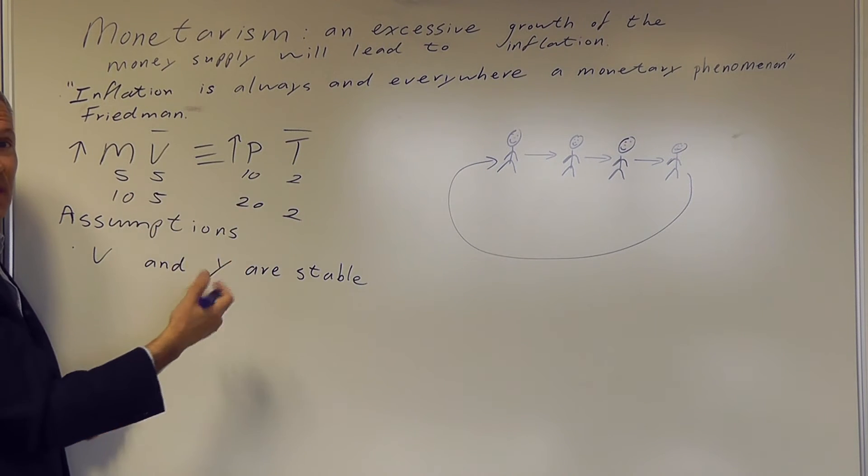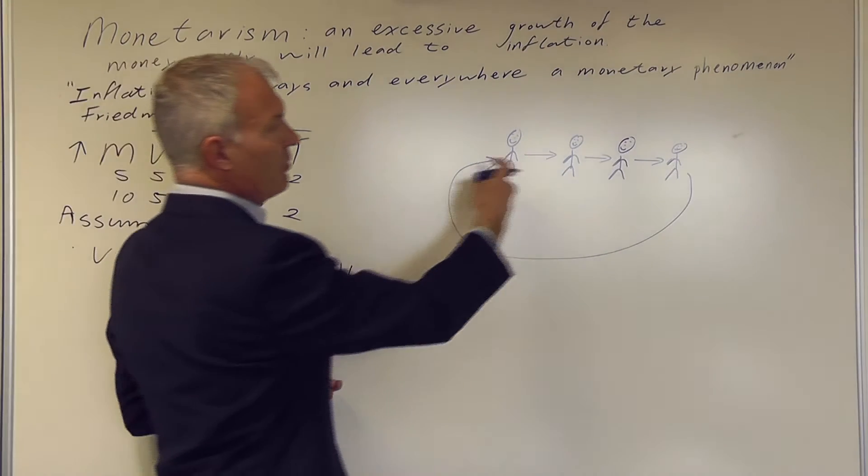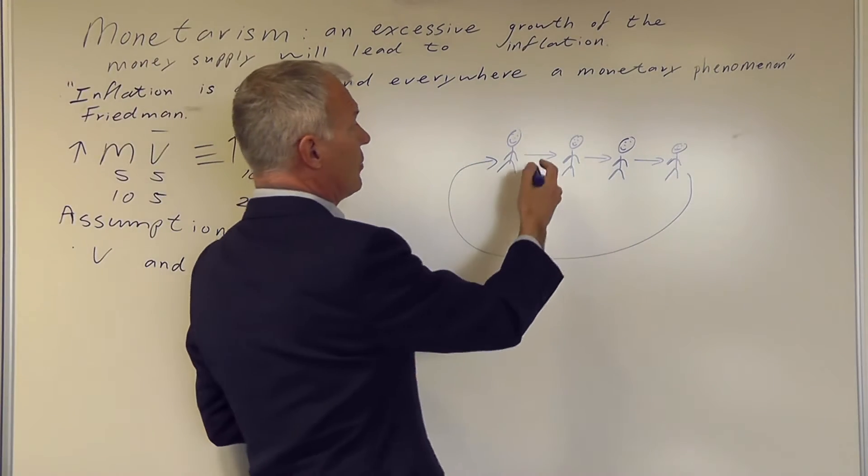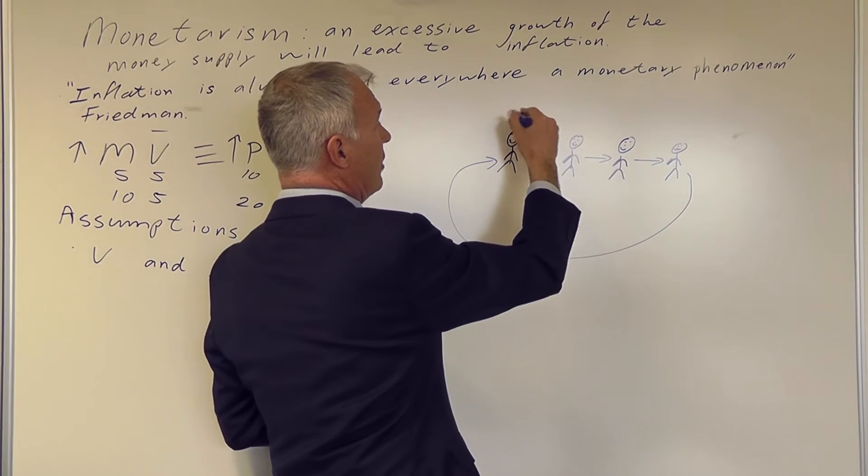So those figures are just to illustrate this. If we look at specific people, say we've got four people in the economy. So they each exchange a product with the other.